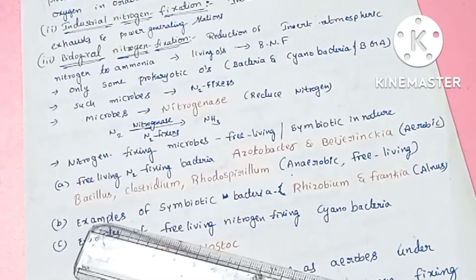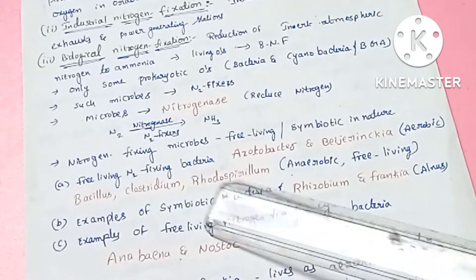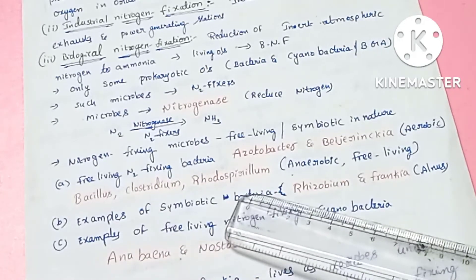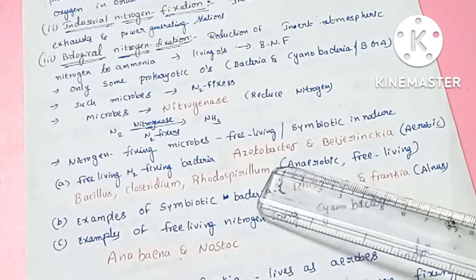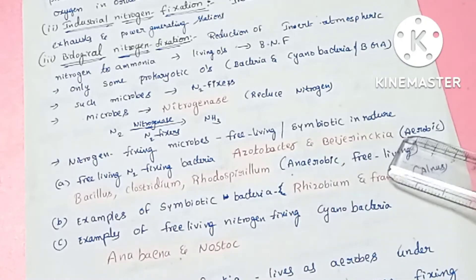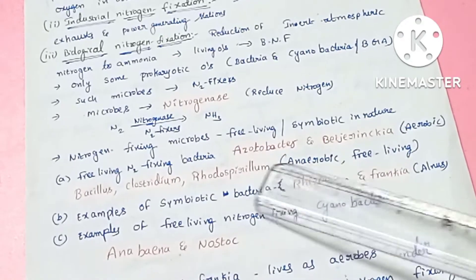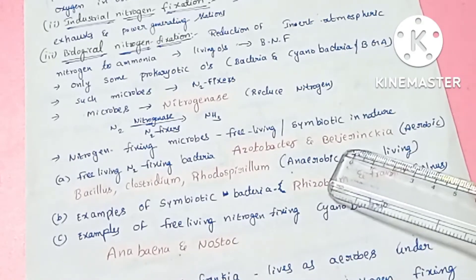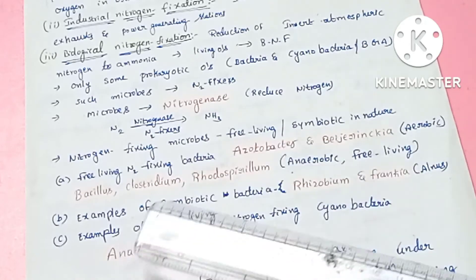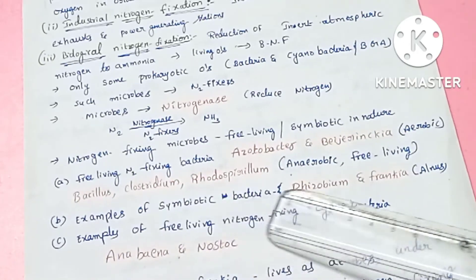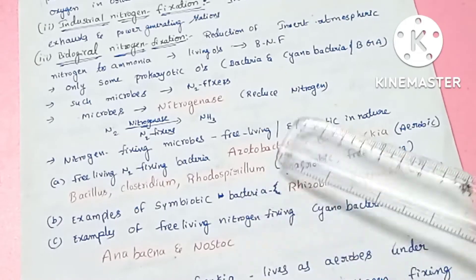Bacillus, Clostridium, and Rhodospirillum are three nitrogen fixers but they operate under anaerobic conditions. So Azotobacter and Beijerinckia are aerobic free-living nitrogen fixers, whereas Bacillus, Clostridium, and Rhodospirillum are anaerobic free-living nitrogen fixers. This is very important.